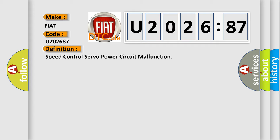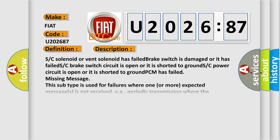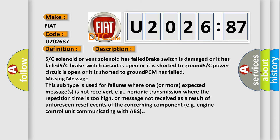And now this is a short description of this DTC code. SC solenoid or vent solenoid has failed, brake switch is damaged or it has failed, SC brake switch circuit is open or it is shorted to ground, SC power circuit is open or it is shorted to ground, PCM has failed, missing message. This subtype is used for failures where one or more expected messages is not received, e.g., periodic transmission where the repetition time is too high, or message not received as a result of unforeseen reset events of the concerning component, e.g. engine control unit communicating with ABS.